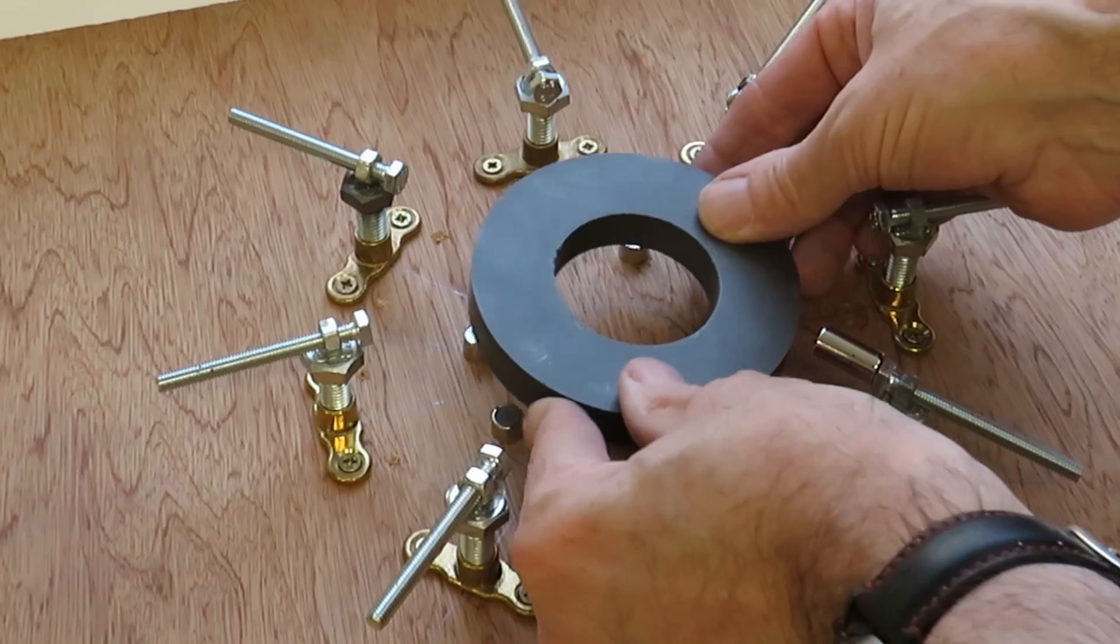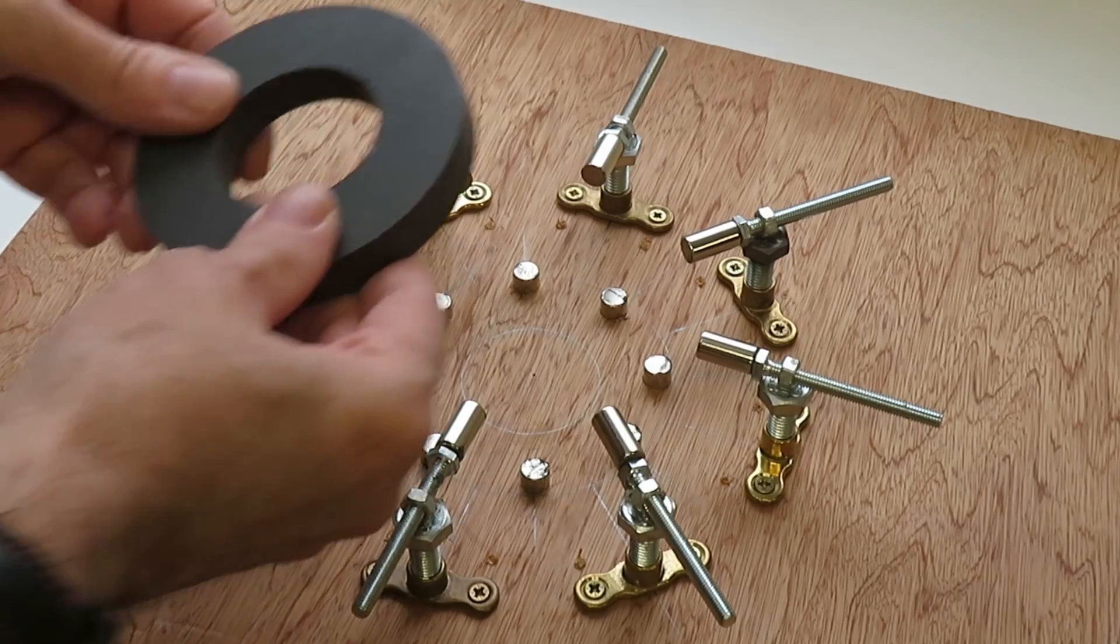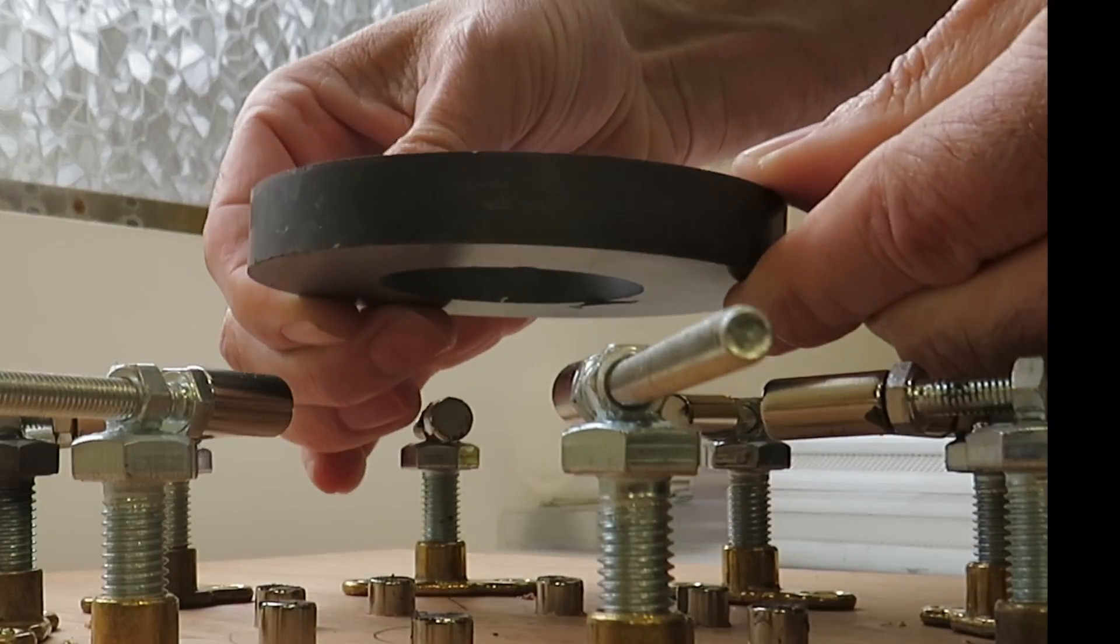Now all the stabilizer magnets are on, I'll put the ring magnet in and lower it down onto the smaller ones in the center.